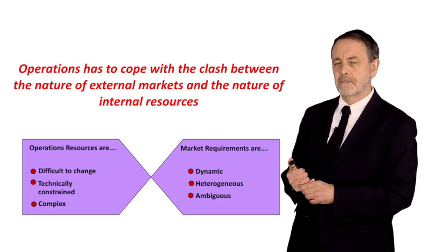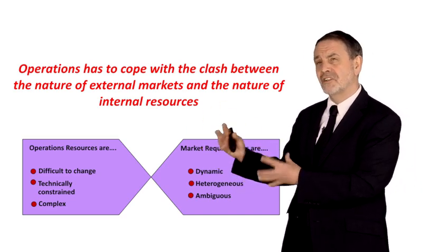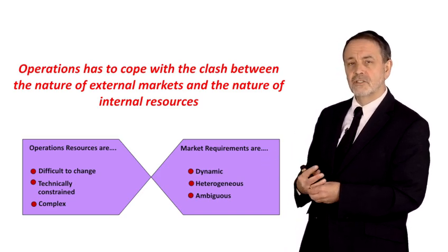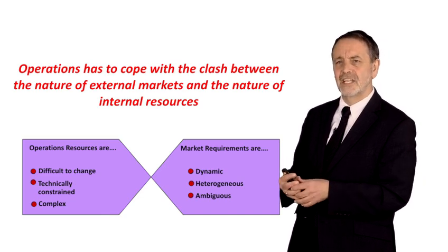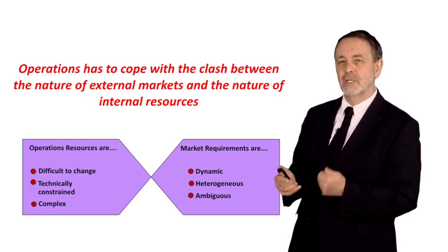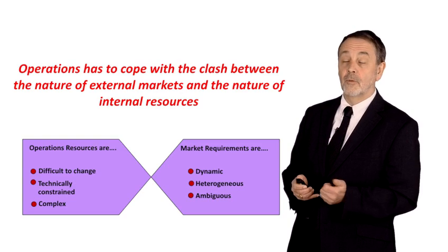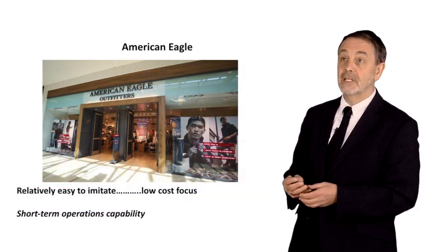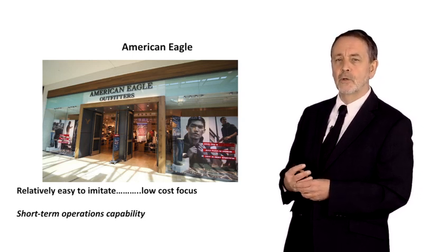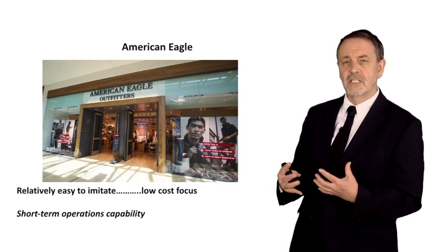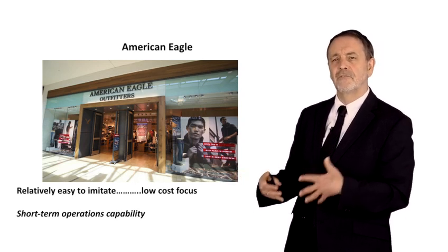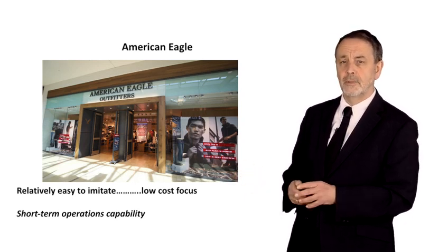So on one side we've got difficult-to-nail-down market requirements, and on the other side we have operations resources which are complicated, technically constrained, with a lot of money tied up. How do we manage that clash? For some companies it's not so easy. Let's think of American Eagle — they clearly compete on a low-cost focus. That's why they're constantly asking should we source in China or should we source in Mexico, what's the exchange rate doing. Very much a short-term operations capability.